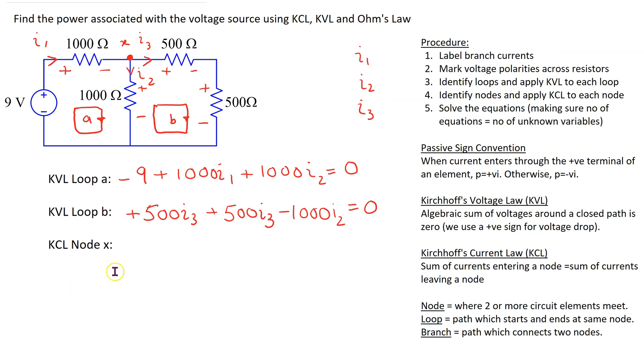Next we apply KCL to node X. Recall that the Kirchhoff current law states that the sum of currents entering a node is equal to sum of currents leaving a node. So let's apply KCL to node X. We can see that there is one current that is entering which is I1. And there are two currents that are leaving which are I2 and I3. So sum of currents entering is equal to the sum of the two currents leaving.